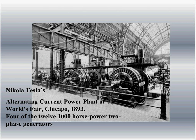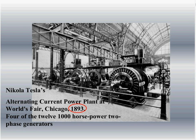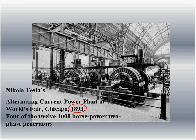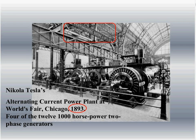When you have AC current — AC current was invented by a fellow by the name of Nikola Tesla — and back at the 1893 Chicago World Fair, they demonstrated his invention. What they've got here is a picture of four of the twelve 1,000-horsepower two-phase generators that he invented. Even though he was the one that invented it, it was Westinghouse that bought his invention, and that was the start of moving everything towards AC electric.